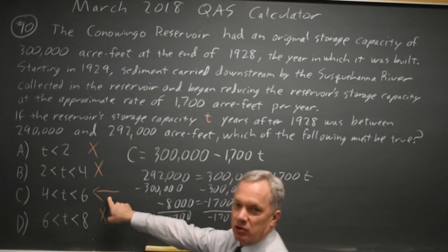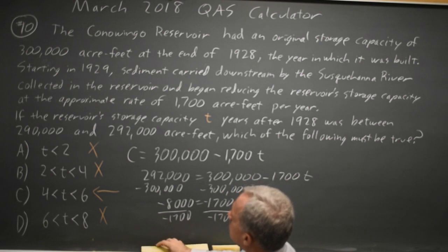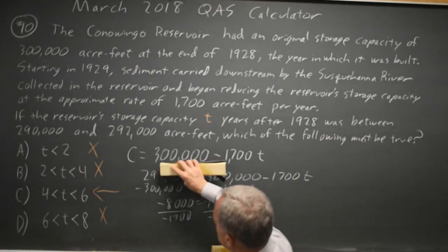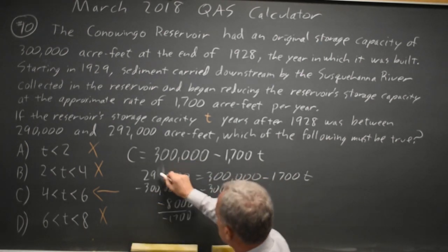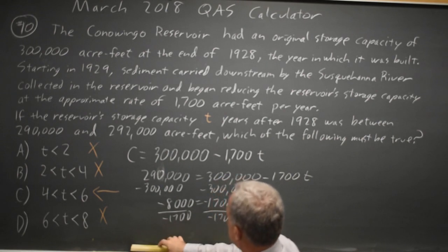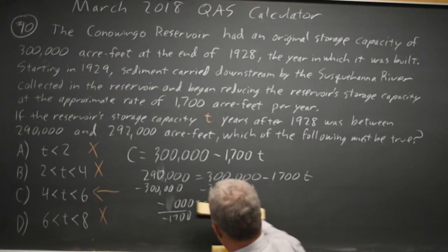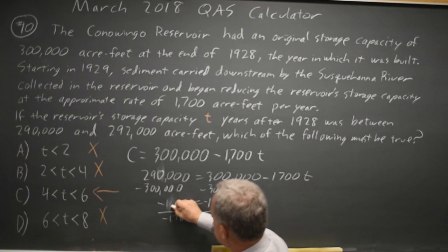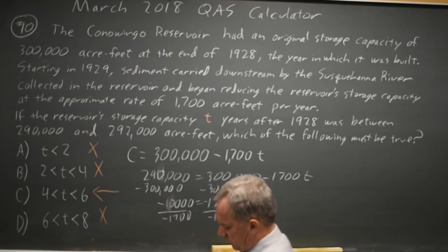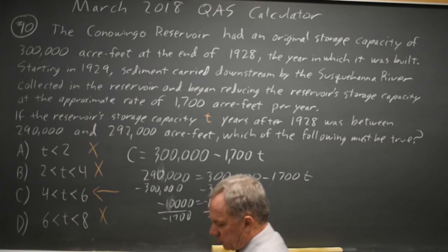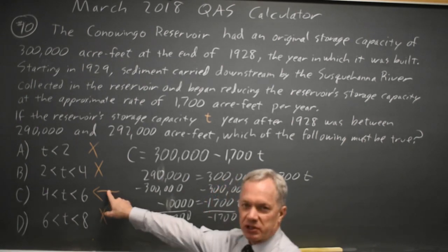Which is between 4 and 6. If I did the same at 290,000, this becomes a minus 10,000, and I get T equals 5.88, which is also between 4 and 6.